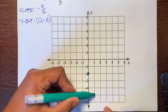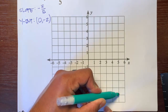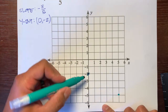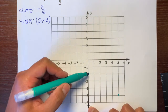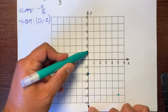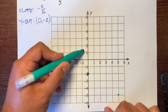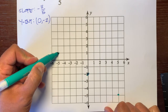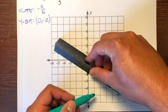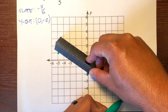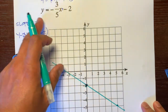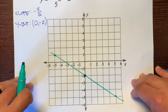All we really need is 2 points. We can also go backwards: instead of down 3 and right 5, we go up 3 — 1, 2, 3 — and left 5: 1, 2, 3, 4, 5. Connect all 3 points and we have a straight line. There is the graph for Y equals negative 3 fifths X minus 2.